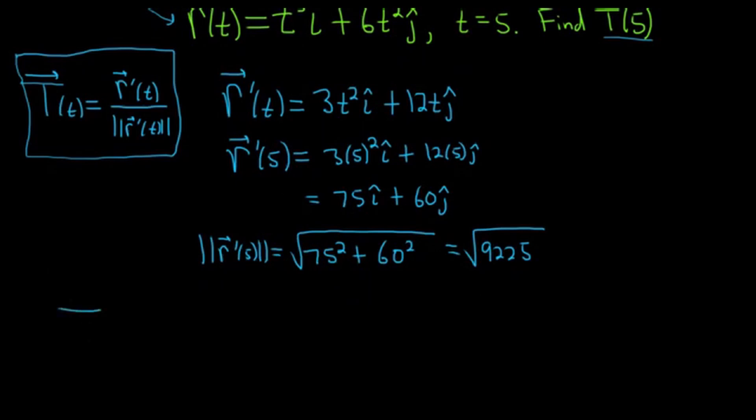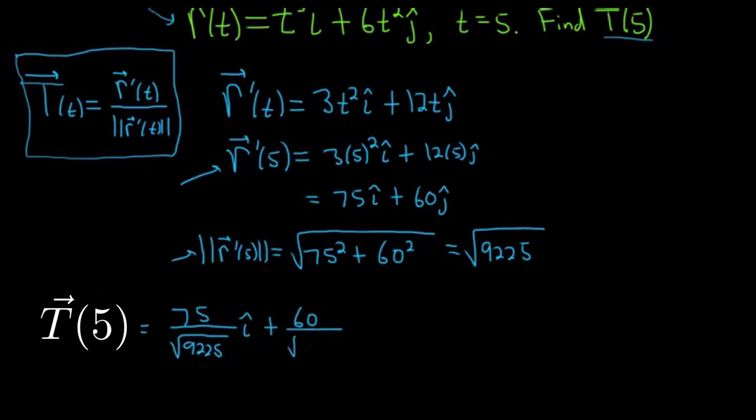So the unit tangent vector is going to be equal to this divided by the magnitude. So basically you just divide each of the components by that. So it will be 75 over the square root of 9,225 i-hat plus 60 over the square root of 9,225 j-hat. Sometimes you get numbers even bigger than this. When in doubt, just leave it like that. It should be okay.